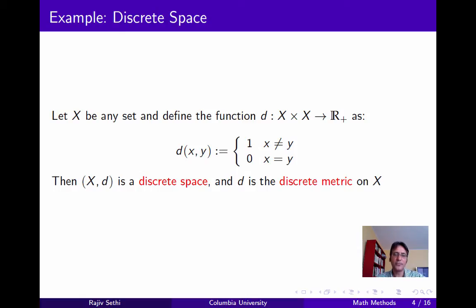Here's an example of a metric space. Let x be any set and let the distance between any two points in x be equal to zero if they are the same point, and one otherwise. Then this is a metric space — you can verify that it satisfies all the conditions necessary. It's called a discrete space, and d is referred to as the discrete metric on x.